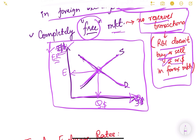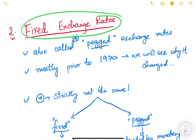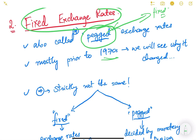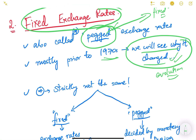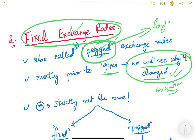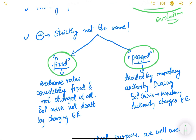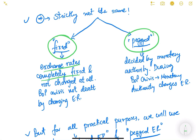The next type of exchange rate regime is the fixed exchange rate regime. The name itself suggests that exchange rates are fixed, or pegged, at a particular rate. Prior to the 1970s, the fixed exchange rate system was prevalent globally. Fixed exchange rate and pegged exchange rate are strictly not the same, though we often use them interchangeably. In the fixed system, exchange rates are completely fixed and not changed at all.